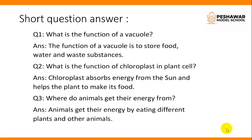Question number 2: What is the function of chloroplast in plant cells? Answer: Chloroplast absorbs energy from the sun and helps the plant to make its food.